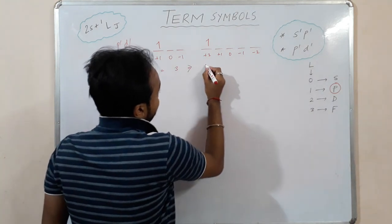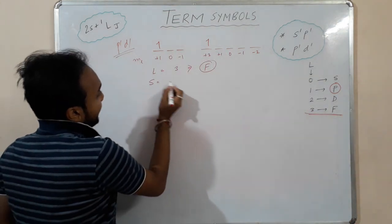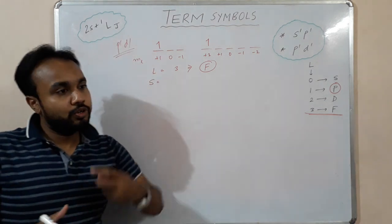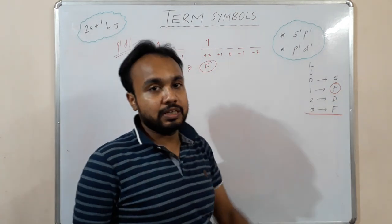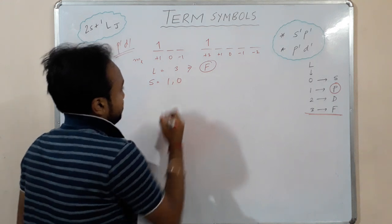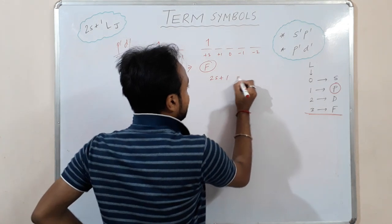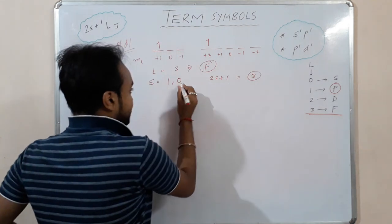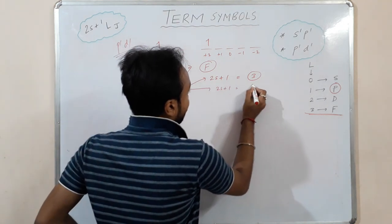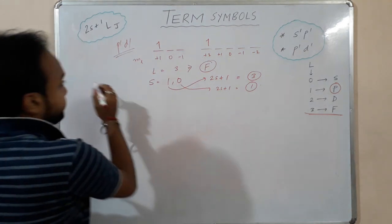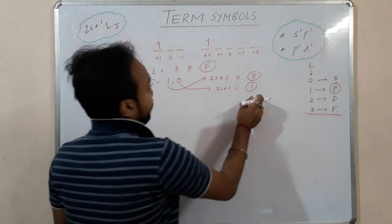For the S value, S = s₁ + s₂ to s₁ − s₂, giving S = 1 or 0. For S = 1, 2S+1 = 3, and for S = 0, 2S+1 = 1. So we have the terms ³F and ¹F.